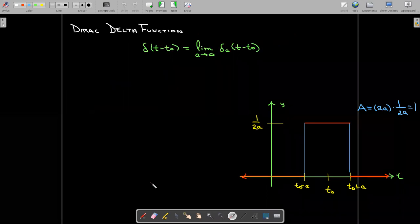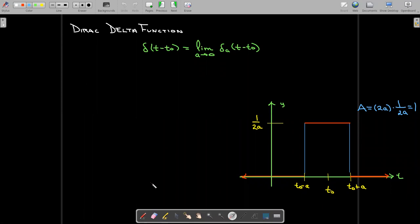So we're going to define the Dirac delta function centered at t-naught as being the limit as a goes to zero of our unit impulse function delta sub a centered at t-naught. So there's two properties of this Dirac delta function, or generalized function.